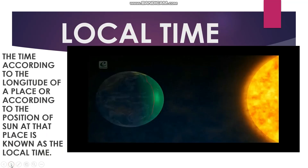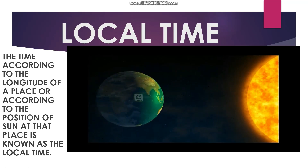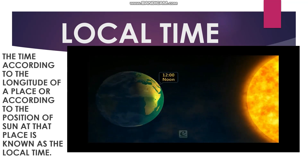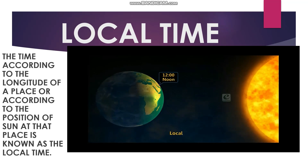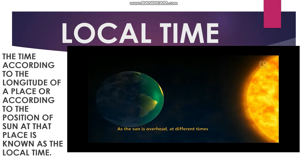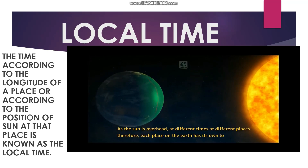Now let's move on to local time. The local time, according to the longitude of a place or the position of the sun at that place, is known as local time. It is based on the local meridian passing over that place. When the sun is shining vertically over a longitude, it is 12 noon at that place. All places situated on the same meridian have the same local time, and every longitude has its own local time.